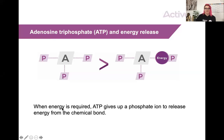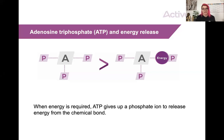So ATP — adenosine triphosphate — and energy release. Adenosine triphosphate is our energy currency within the body; without ATP we cannot create energy. It is literally adenosine with three phosphates attached to it. When we chemically release energy, one of the phosphates breaks off and that gives us the energy, leaving us with adenosine and two phosphates — adenosine diphosphate. We then need to re-synthesize the phosphate we've lost to create ATP again.